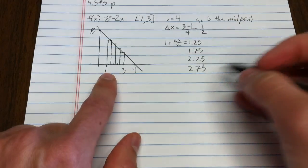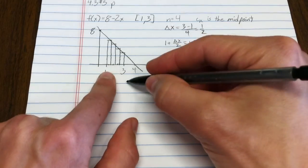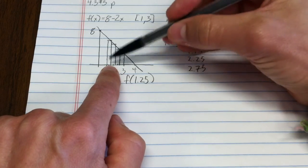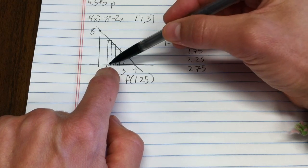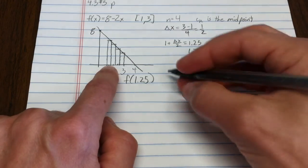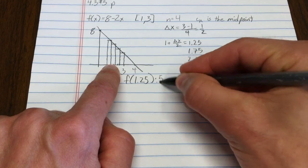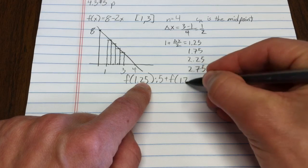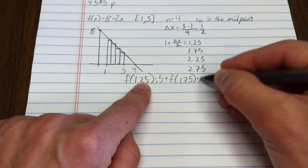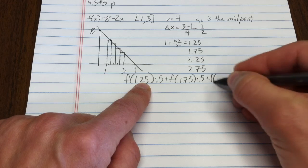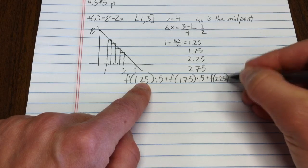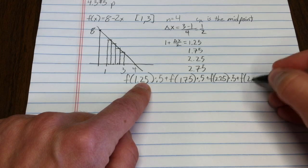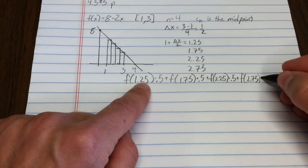So the height of that box would, of course, be f of 1.25. The height approximation, the rectangle's approximate height, will be the exact height of the function halfway across that rectangle times the width of the box, times 0.5, that's my delta x, plus f of 1.75 times 0.5, plus f of 2.25 times 0.5, that's the third rectangle, plus f of 2.75 times 0.5.